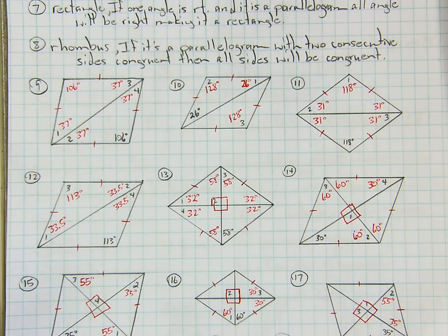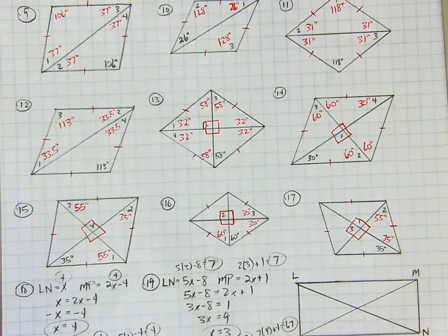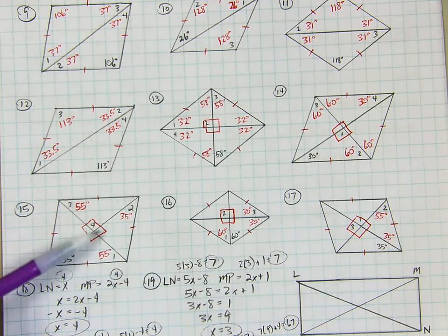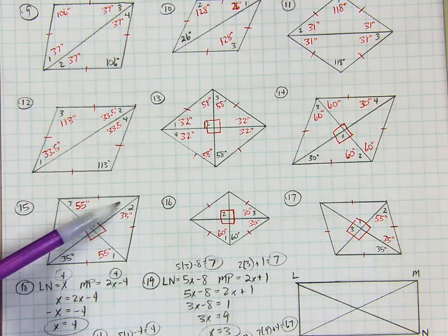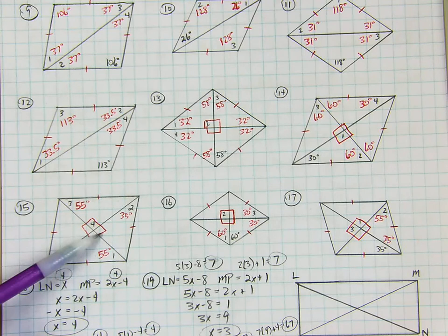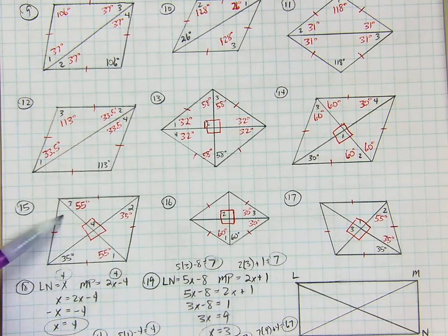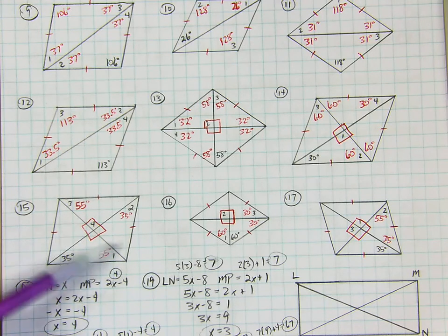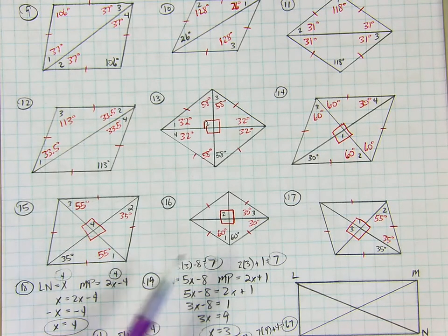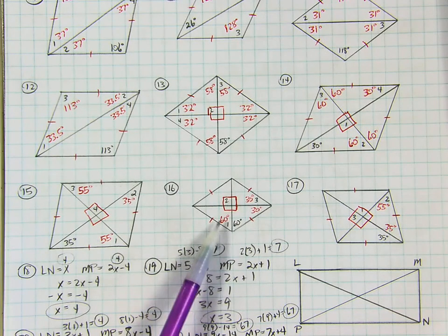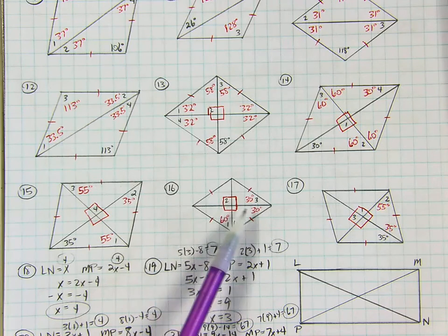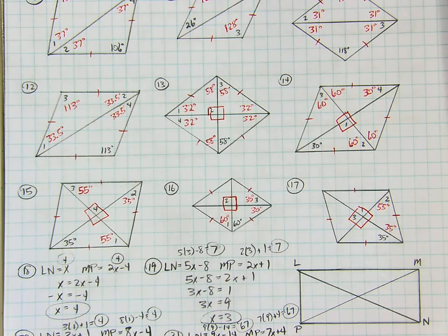Number 15: both diagonals again. Angle 4 and all angles at the intersection are 90 degrees. If this is 35, angle 2 is 35, and all of those would be 35. Then 90 and 35 from 180 gives 55. So angles 1 and 3 are 55. Number 16: two diagonals. If this is 60, angle 1 is 60, angle 2 is 90, and angle 3 is 30.